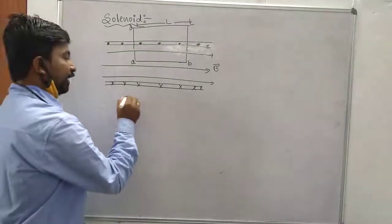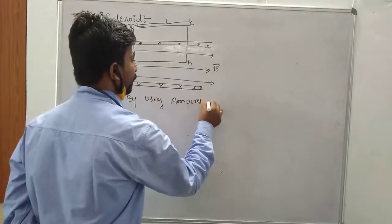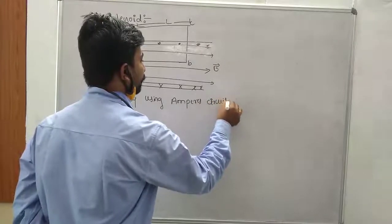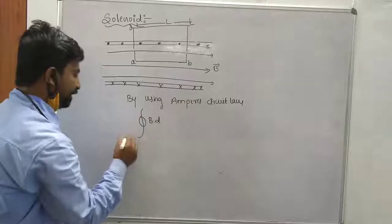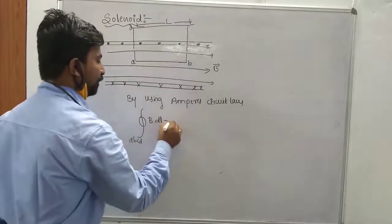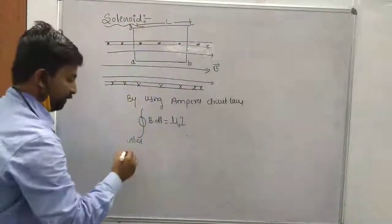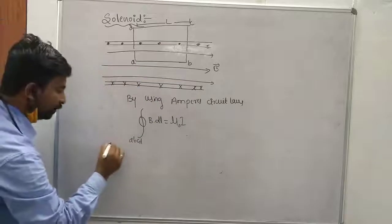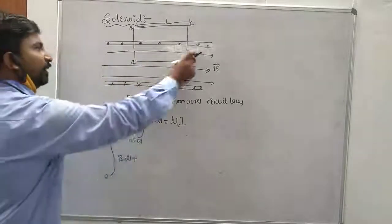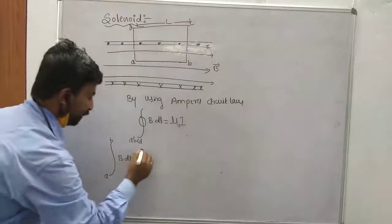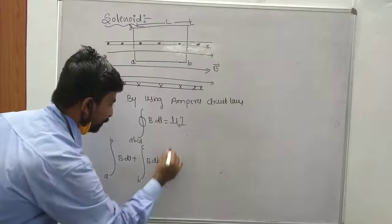By using Ampere's Circuit Law, the line integral of B·dL around the rectangular loop ABCD is equal to mu naught times the net current passing through that loop. We can write this by each side: the line integral from A to B of B·dL, plus B to C, plus C to D, plus D to A equals mu naught times the net current enclosed.